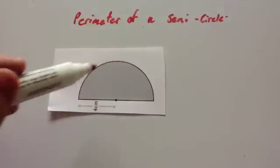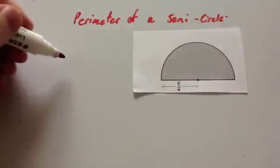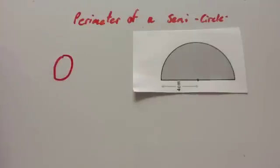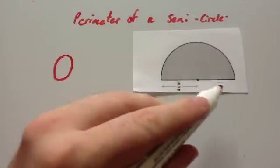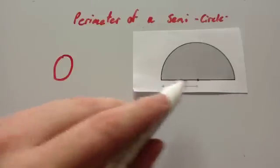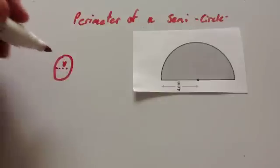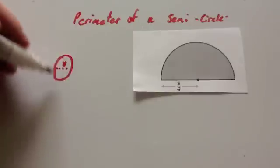So let's first of all find the length of this arc. Whenever I'm finding the perimeter of a semicircle, first of all I consider a whole circle. Now this circle has got a radius of 4cm, which means the diameter of the whole circle would be 8cm. So it means that this distance across here is 8cm. So let's work at the circumference of this whole circle.